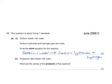Potassium also reacts with water. The name of the products of this reaction will be potassium hydroxide and hydrogen.